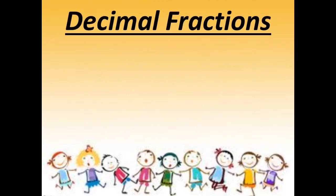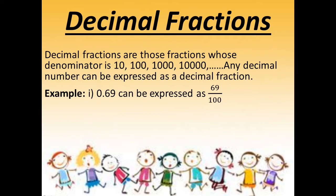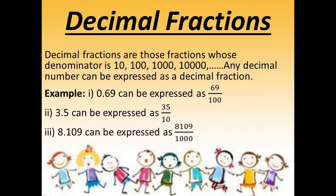Next is decimal fractions. Decimal fractions are those fractions whose denominator is 10, 100, 1000, 10000, and so on. Any decimal number can be expressed as a decimal fraction. Since the number of digits on the right of the decimal point is equal to the number of zeros in the denominator, we can express 0.69 as 69 upon 100, 3.5 as 35 by 10, and 8.109 as 8109 upon 1000. Hopefully it is clear to you.